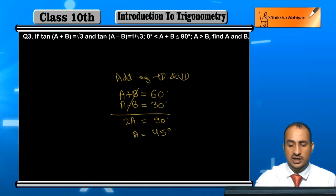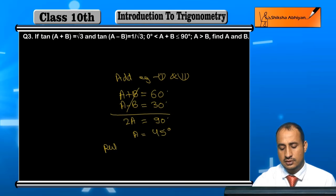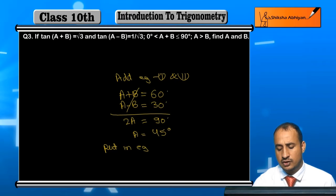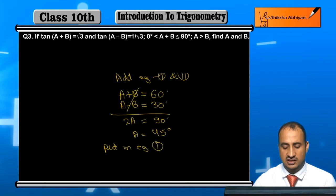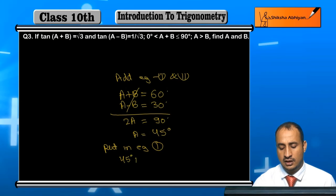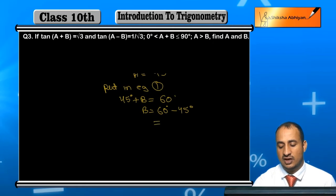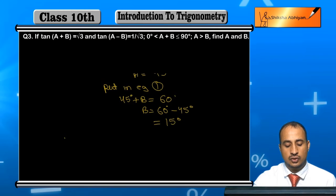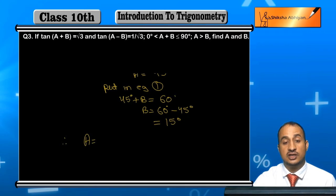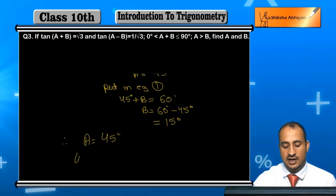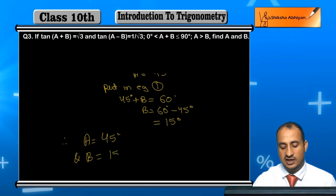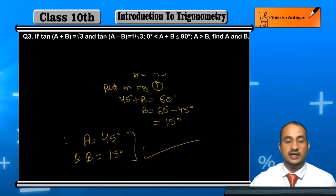Now A = 45°. Put this in equation 1, where A + B = 60°, meaning 45° + B = 60°, and hence B = 60° - 45° = 15°. So therefore A = 45° and B = 15° - these are the values you had to find out.